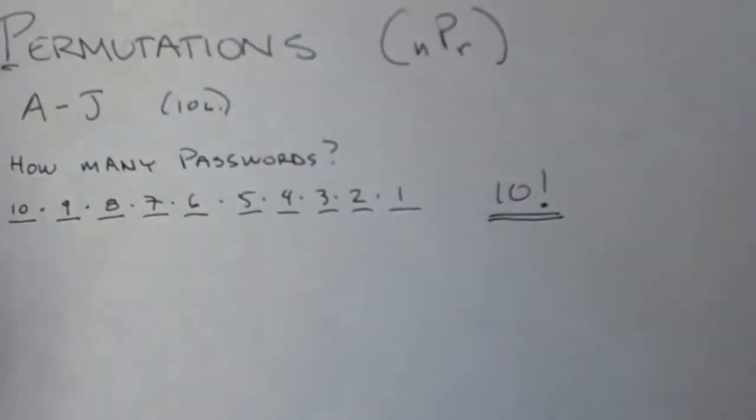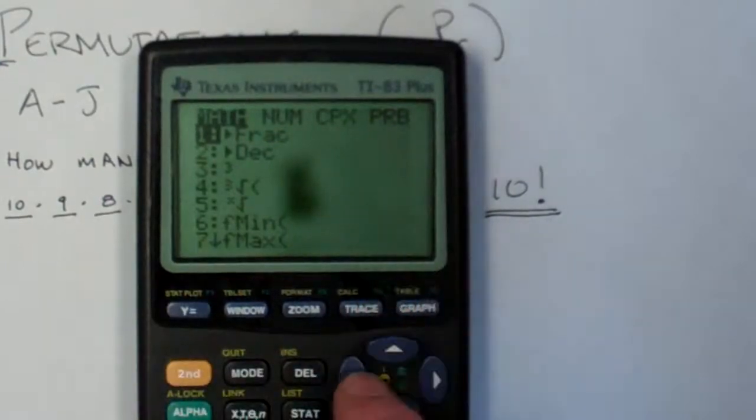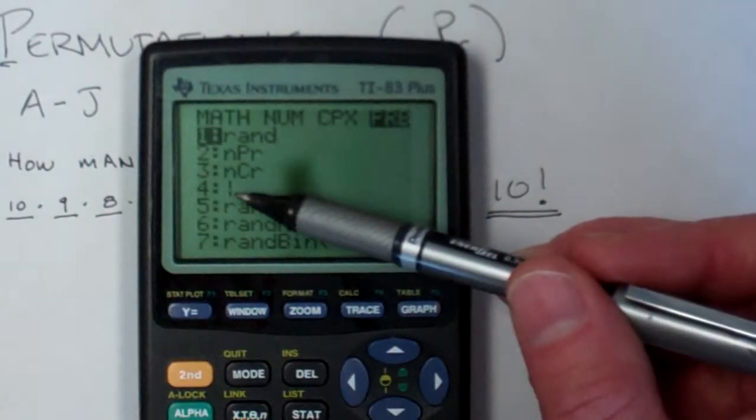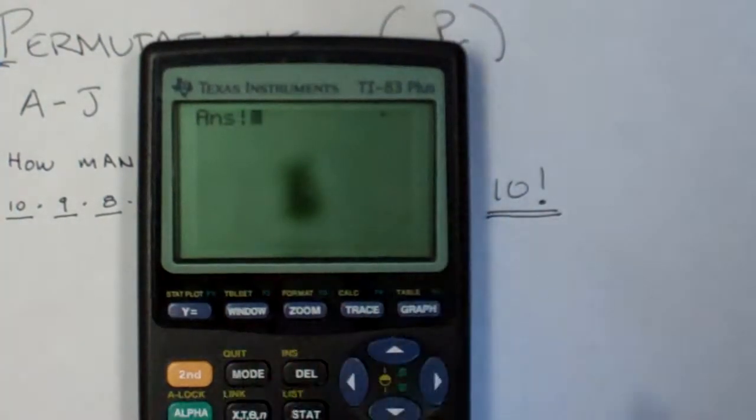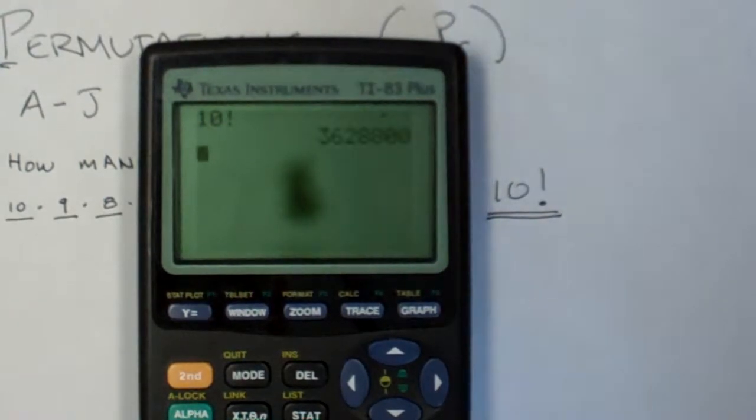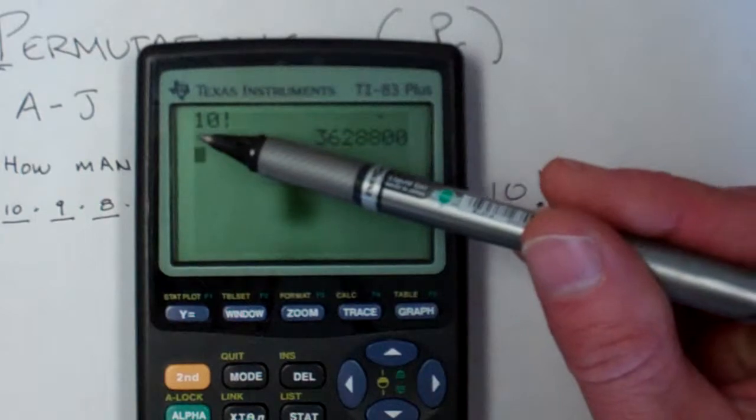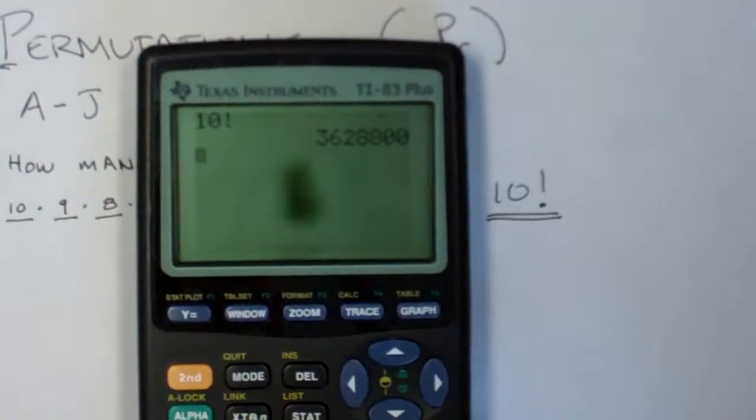So try that on your calculator. You should know how to do this. You hit the math button, you go over to probability. I like left arrow once, it gets me there faster. And I've got that four option, so I hit four. And I don't know what the answer was, but if I go in front of it and delete that and then insert the number ten, there's ten factorial. I wouldn't have to go through that complicated process. Normally you just type the number, then remember to hit the factorial next. And there it is. It's a big number.